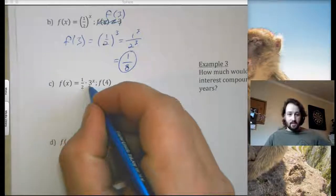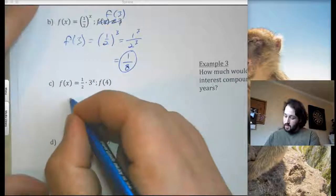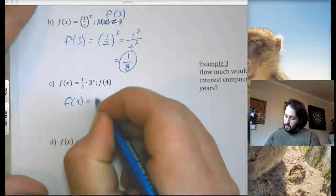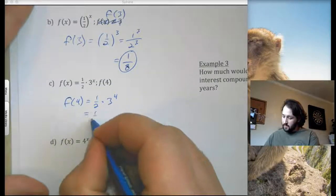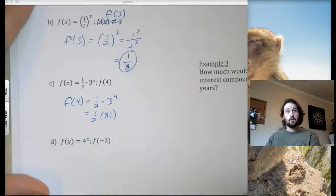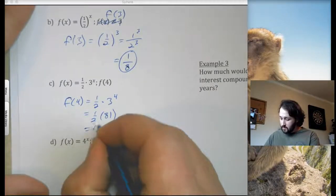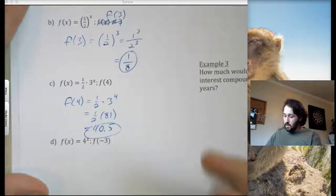1 half times 3 to the x. You want to find f of 4. So f of 4 equals 1 half times 3 to the 4th. Well, that would be 1 half. We've already done 3 to the 4th. It's 81. So 1 half times 81, which would be 40.5. So 40.5. Yes. That would be my solution.